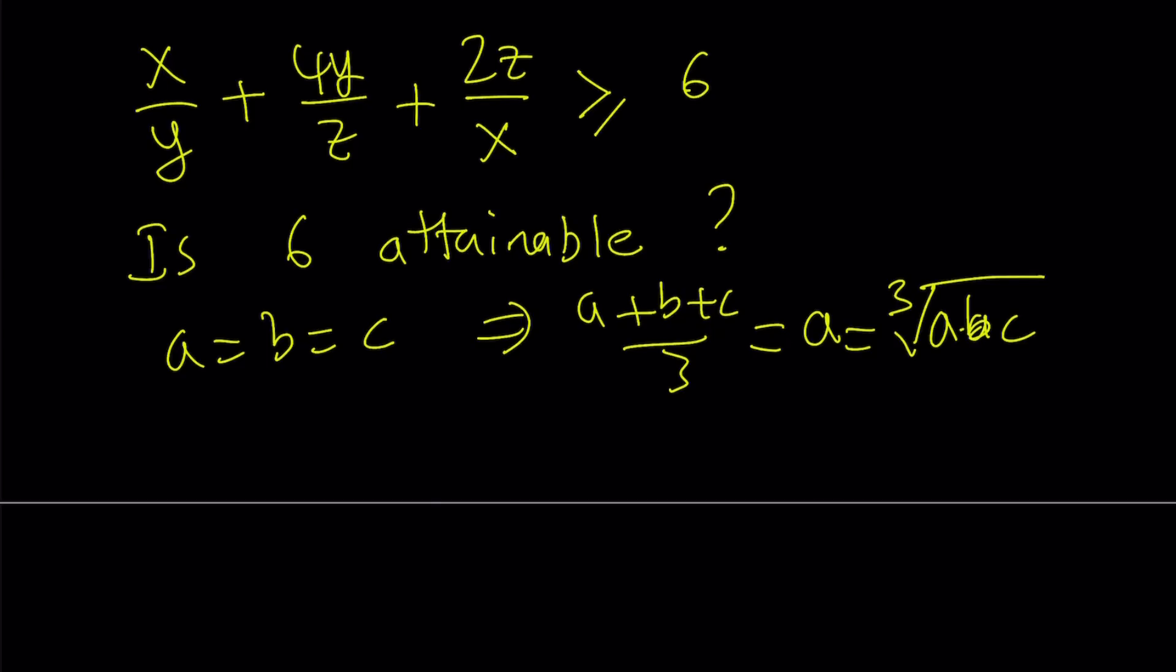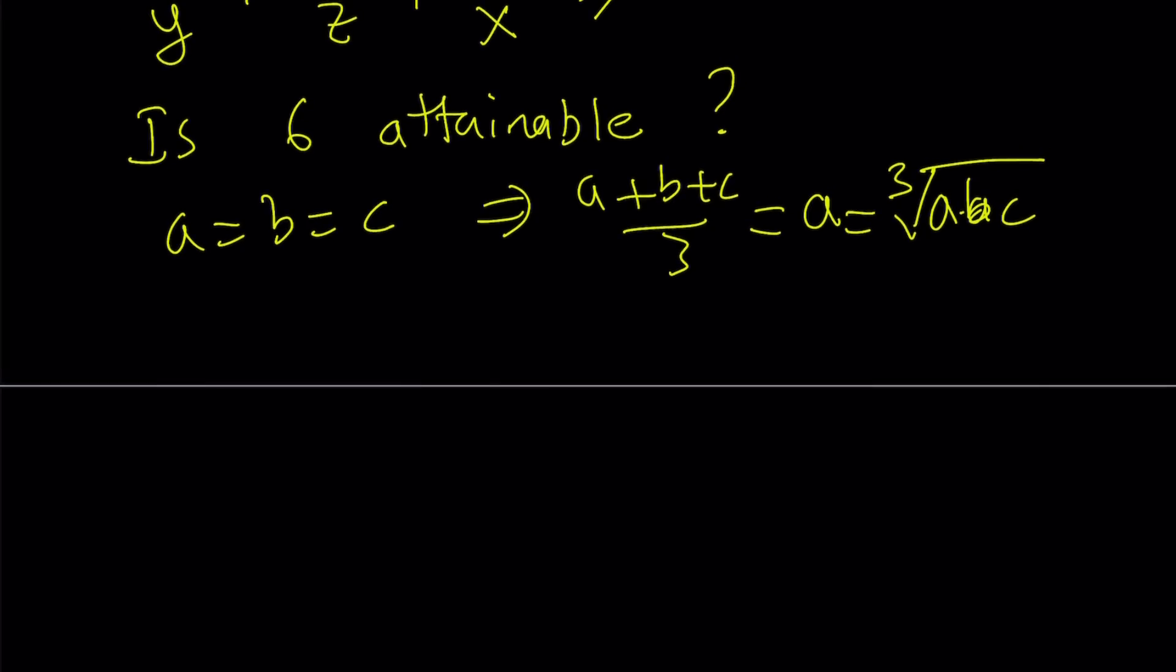Let's check if these three values, x over y, 4y over z, and 2z over x, be equal to each other. And for that to happen, x over y equals 4y over z, and that equals 2z over x.